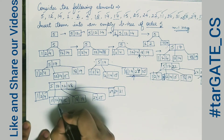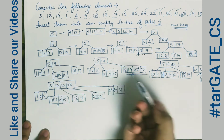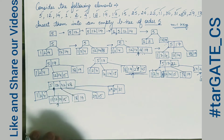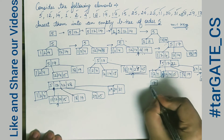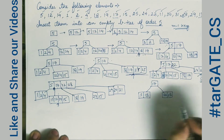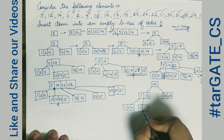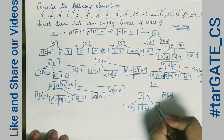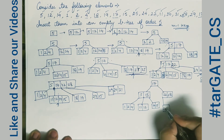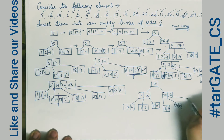Next, inserting element 13 requires it to go into the root node, but the root node is already full. So we break the root node: 17 becomes the new root. The left internal node becomes 5 and 13, and the right internal node becomes 22 and 28. The leaf nodes are: 1, 2, 4 / 11 and 12 / 14 and 15 / 18 and 19 / 24 and 25 / 29, 30 and 31.